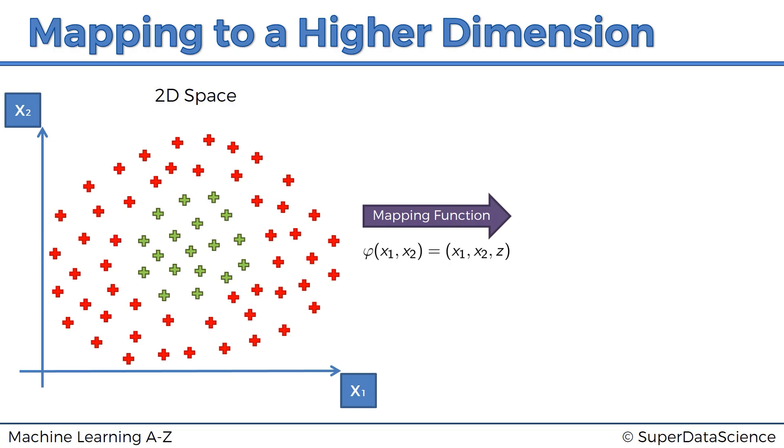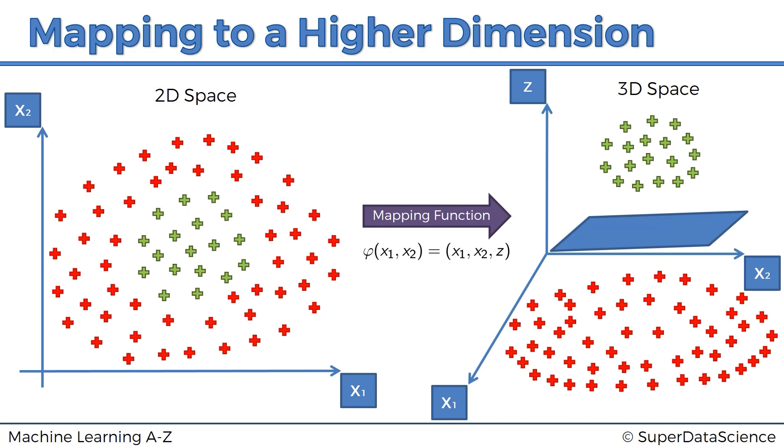And again, there could be multiple different options and so on, but basically based on the previous example, we now know that it's possible. Like we've seen empirical evidence that it is possible to do. And the same thing applies to two dimensional space, moving into a three dimensional space. You would map it into a three dimensional space and then somehow it would become a linearly separable data set in this space. And here we've got the new dimension, which is Z. And in a three dimensional space, the linear separator is no longer a line. It's a hyperplane. And so this hyperplane separates the two parts of our data set in the way we want.